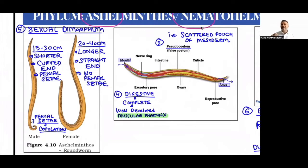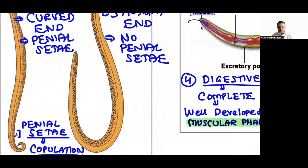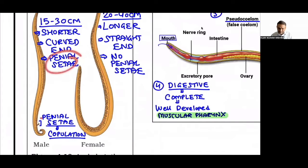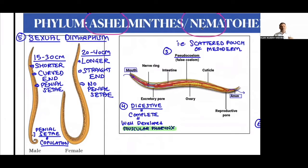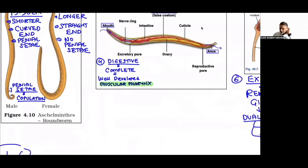Aschelminthes are the first phylum showing sexual dimorphism — 'di' means two, 'morpho' means form. There are two separate individuals: male and female. The male is shorter (15–30 cm) while the female is longer (20–40 cm) with a curved end. The male has penial setae — a copulatory organ used to transfer male gametes into the female body.